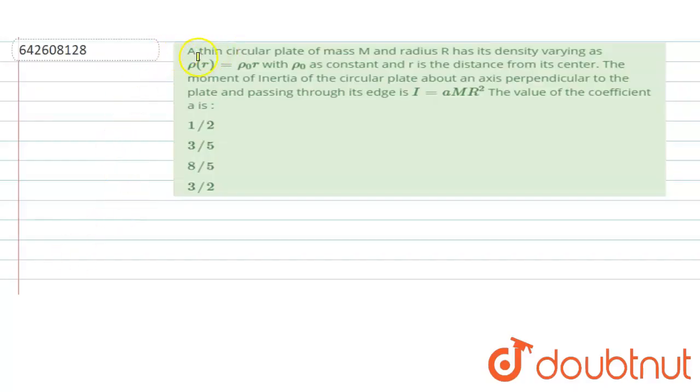Hello, the problem states that a thin circular plate of mass m and radius r has density varying as rho is given by rho naught r, where rho naught is a constant and r is the distance from its center. So we have to find its moment of inertia of the circular plate about an axis perpendicular to the plate and passing through its edge. I is alpha times mr square, so we have to find the value of alpha.